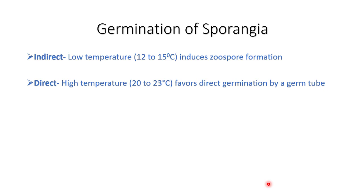Germination of the sporangia takes place by two methods: indirect and direct. In indirect germination, if there is low temperature with moisture and high atmospheric humidity (100%), the sporangium germinates by means of zoospores. At high temperature or during dry conditions, it germinates directly by means of a germ tube.